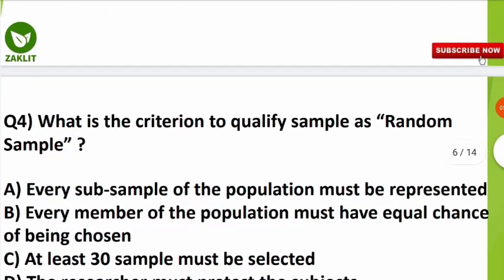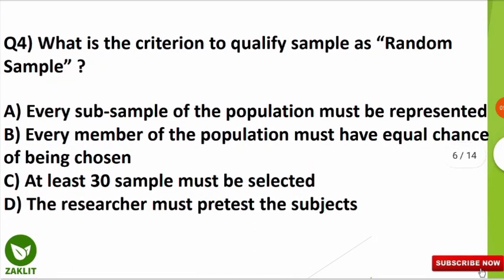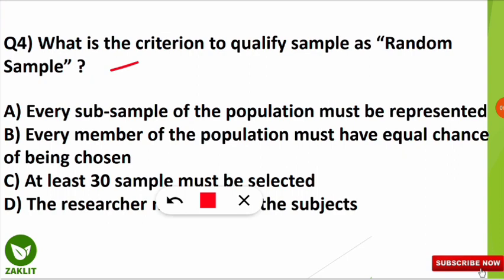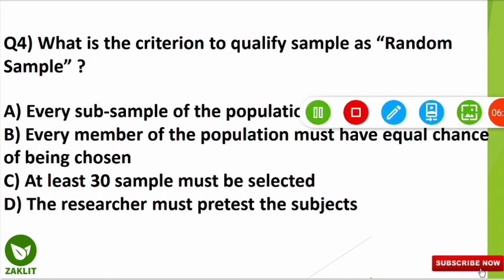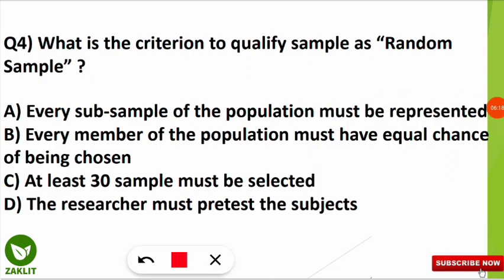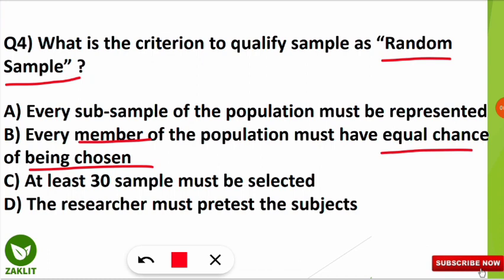Let's move to the fourth question: what is the criterion to qualify a sample as a random sample? This is a frequently asked question. The correct option is B — in a population, if every member has an equal chance of being chosen, that is equal probability for every member, then it is called random sampling. It is unbiased and is a type of random sampling technique.